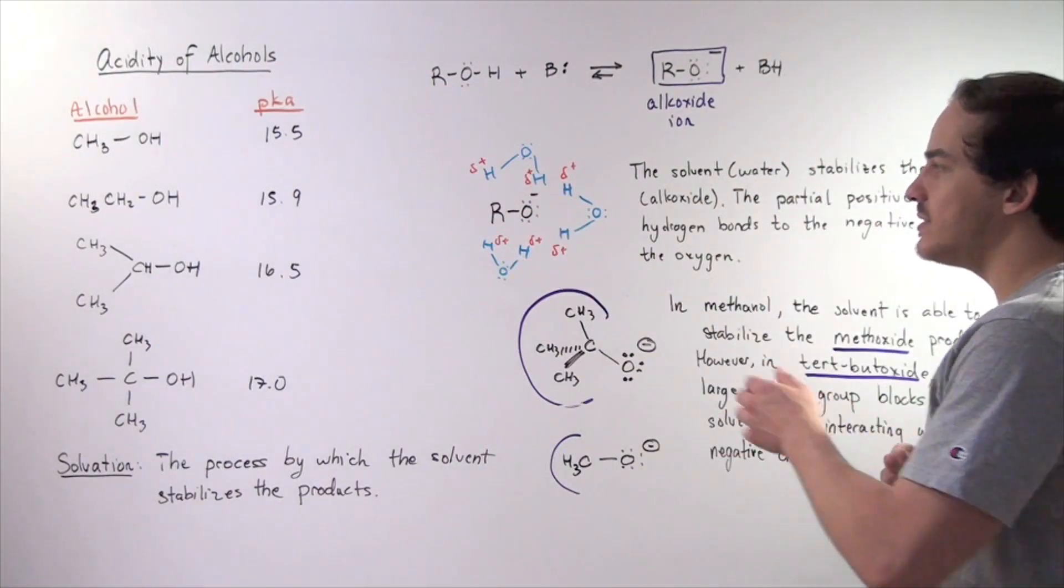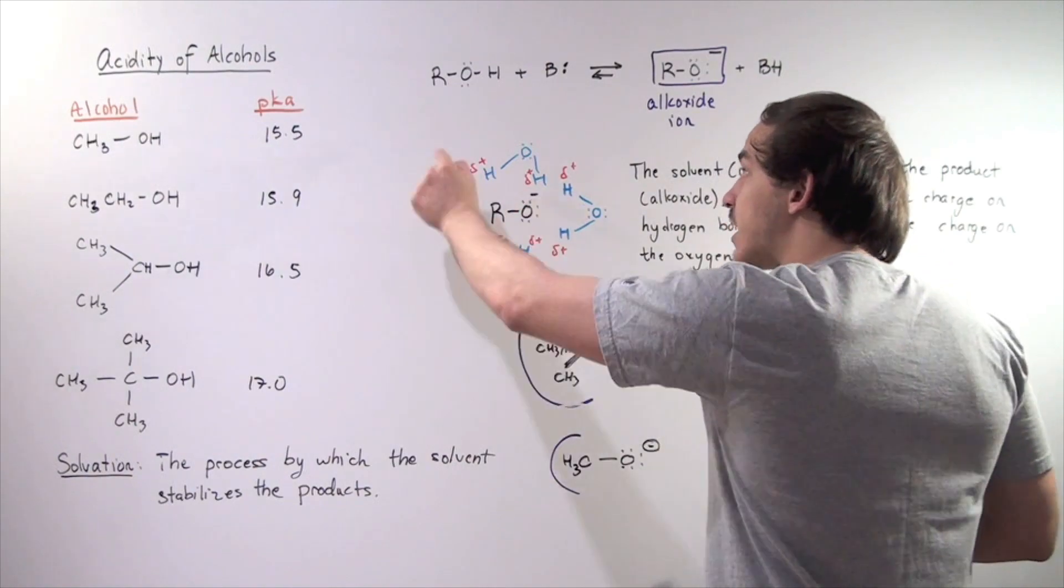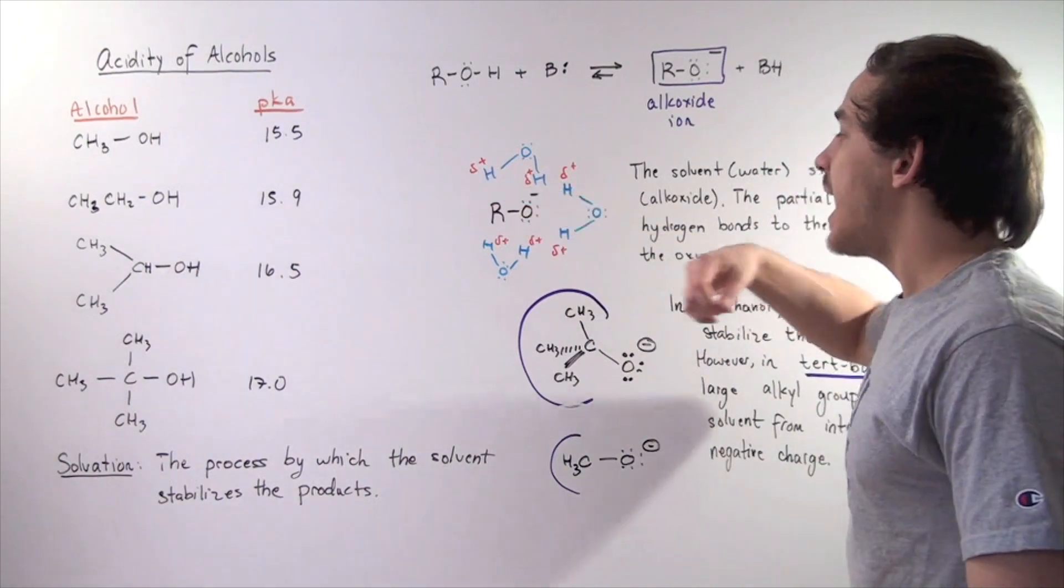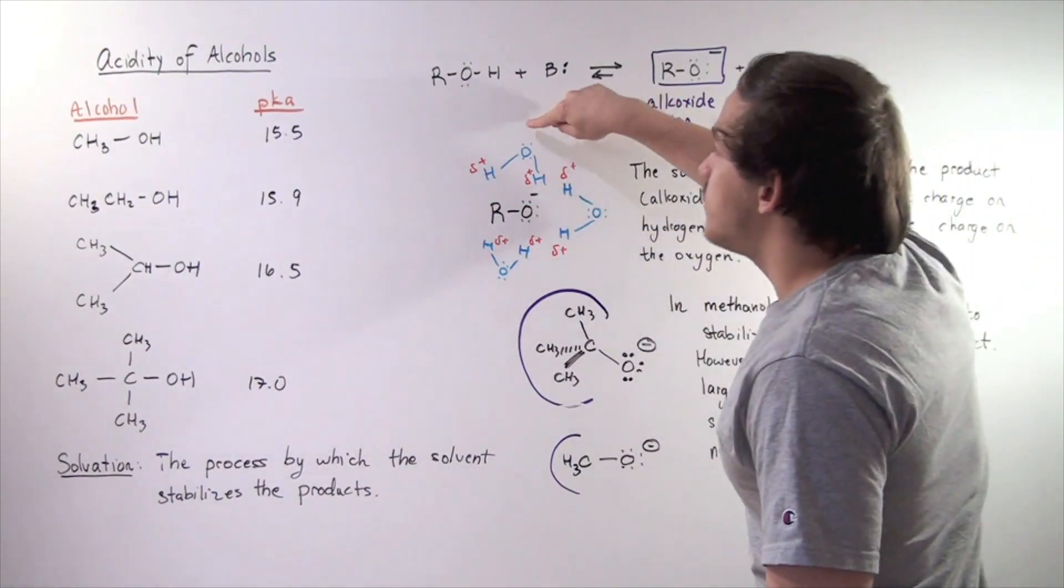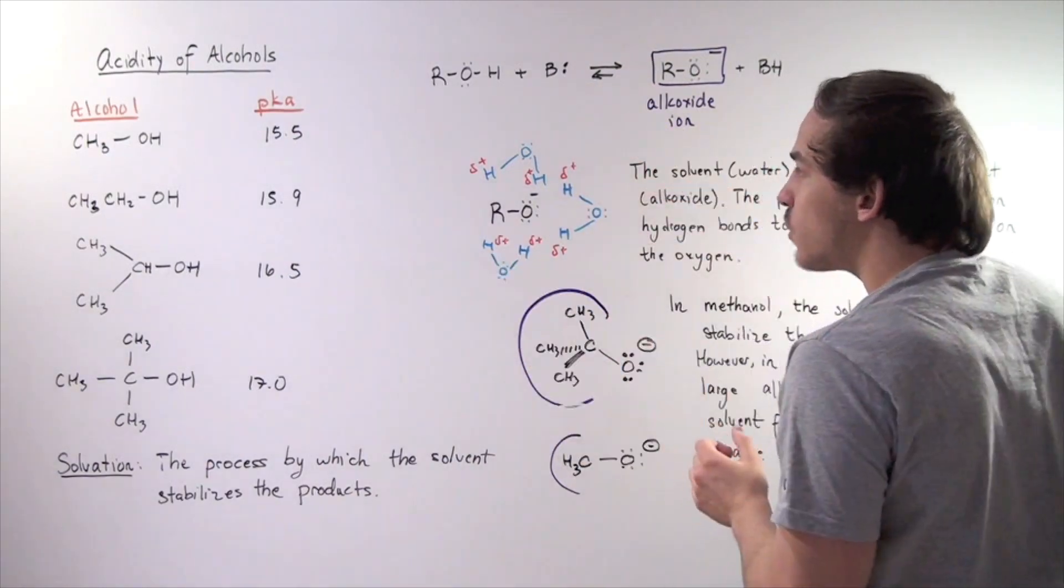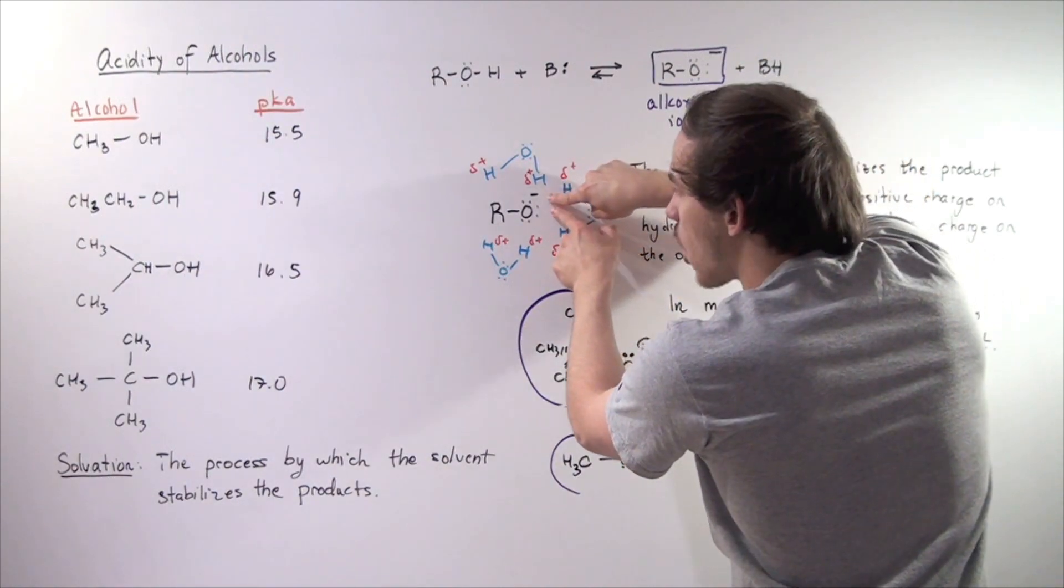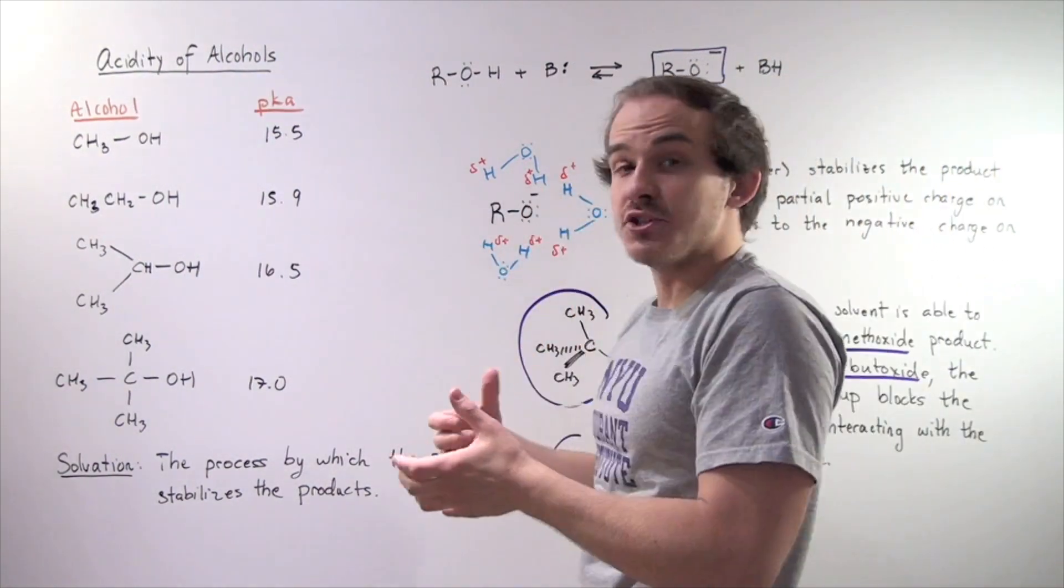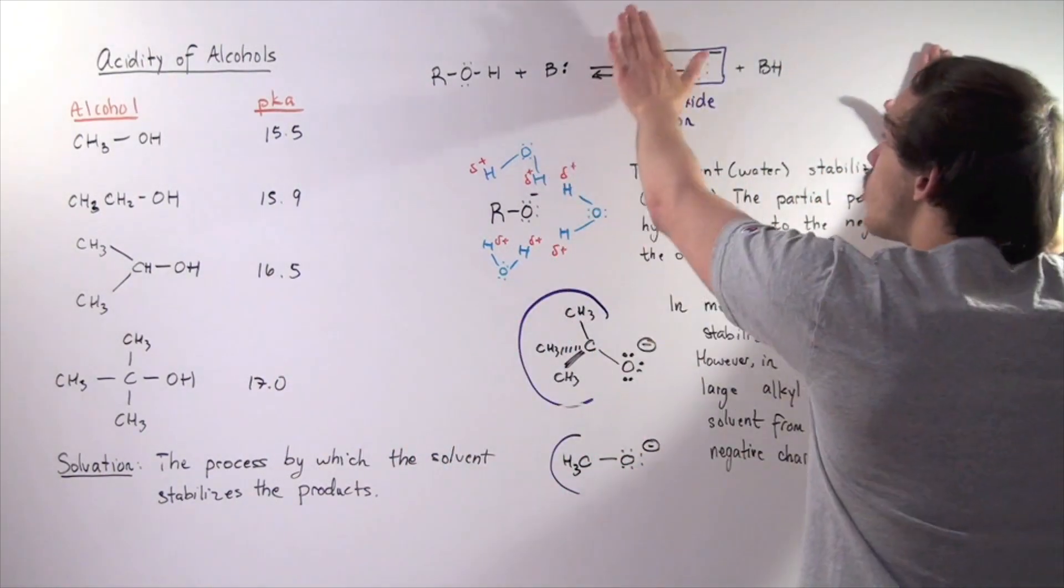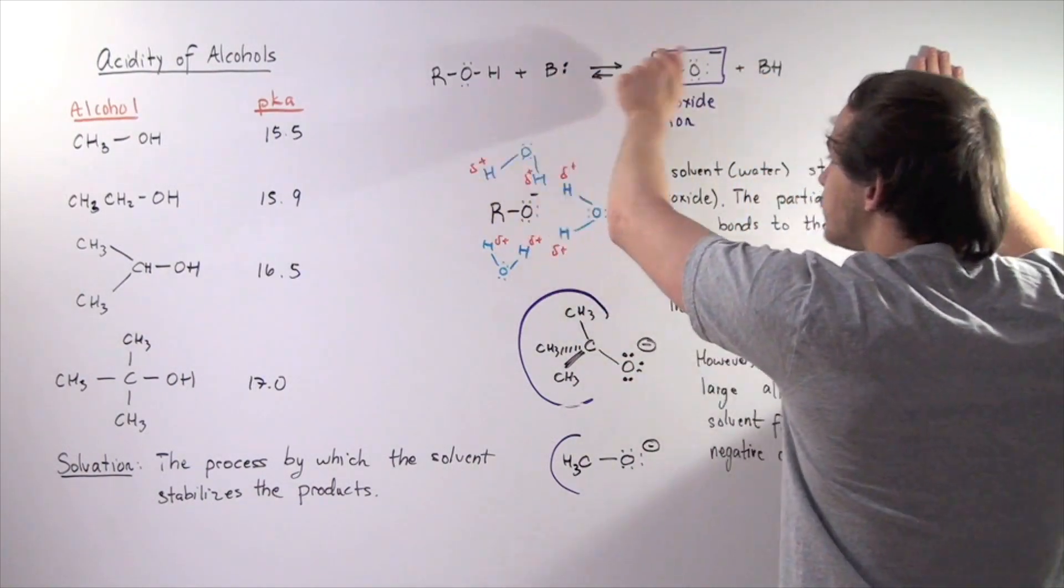Let's see exactly what that means. Here we have our alkoxide ion. Recall that our water molecule is polar. It has a partial positive charge on the H's and a partial negative charge on the oxygen. So the H's orient themselves accordingly so that there is interaction between the positive charge and the negative charge. And this electrostatic interaction between charges is stabilizing. And so the more stable this product is, the more likely our reaction is to take place.